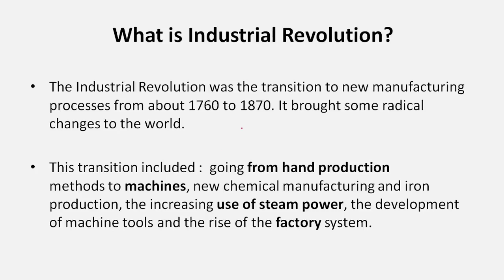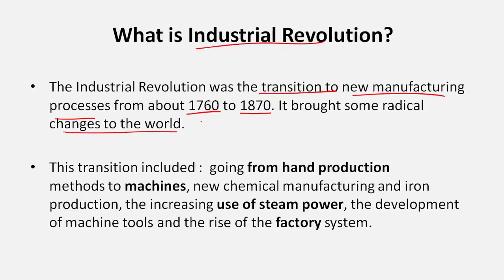The first question that comes to mind is: what exactly is the Industrial Revolution? Industrial Revolution was the transition to new manufacturing processes from about 1760 to 1870 — it brought radical changes to the world. Roughly, the time period was from the middle of the 18th century to the middle or later part of the 19th century.